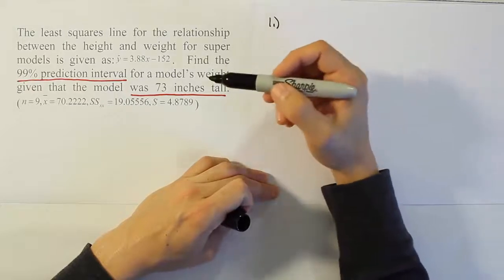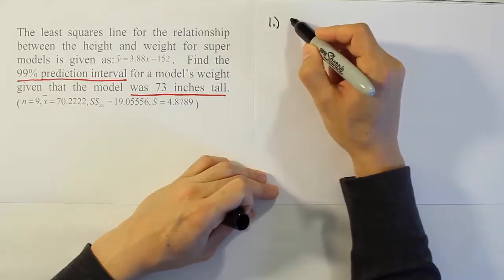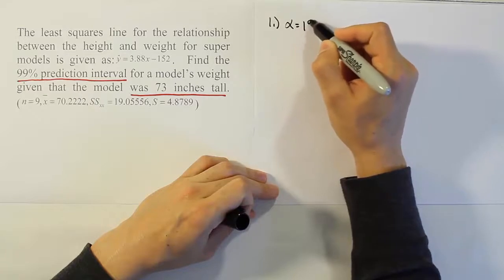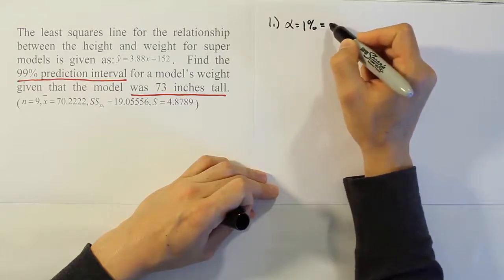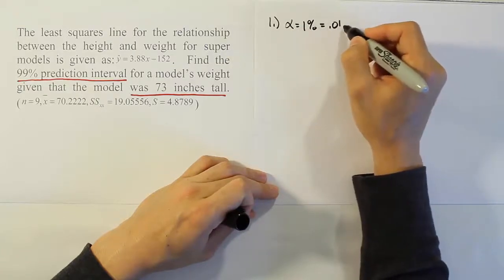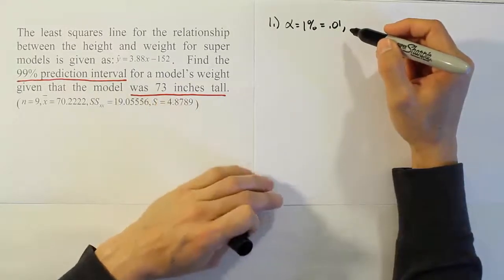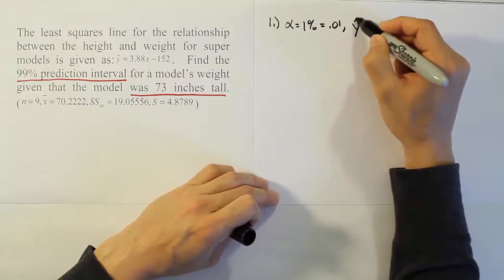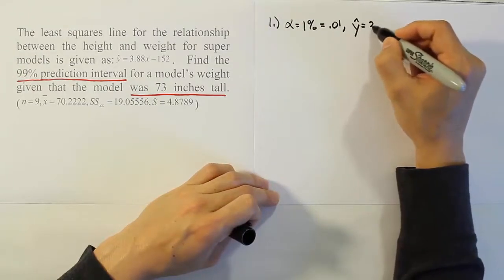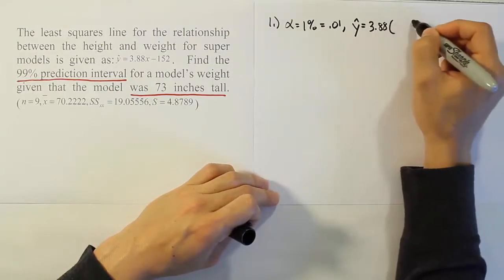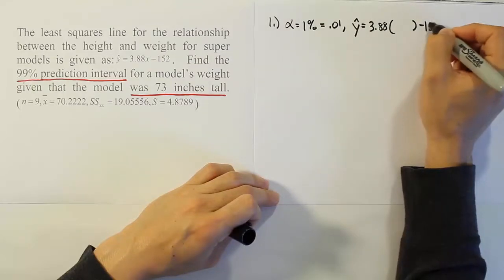Our alpha in this case, given it's a 99% prediction interval, will be 1%, which is the same as 0.01. Now, let's plug in her height of 73 inches into our model to see what our point estimator y hat will be. So 3.88 blank minus 152.